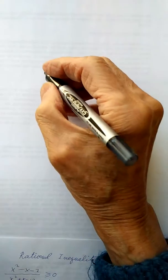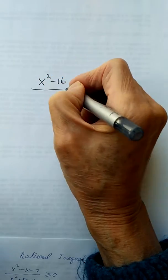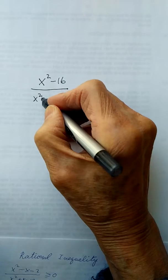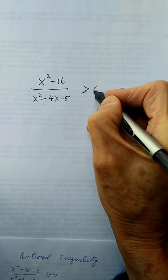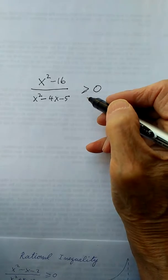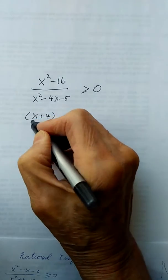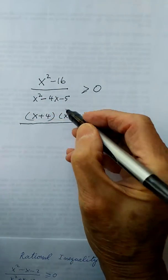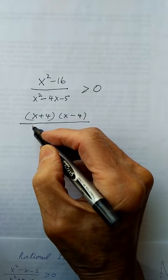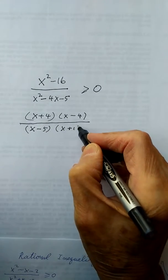Next example: x squared minus 16 over x squared minus 4x minus 5, and this is larger than 0. For this one, the function is not in factored form, so I factor it. The numerator is a difference of two squares: (x plus 4)(x minus 4). The denominator is a trinomial: (x minus 5)(x plus 1). So the expression is (x plus 4)(x minus 4) divided by (x minus 5)(x plus 1), larger than 0.